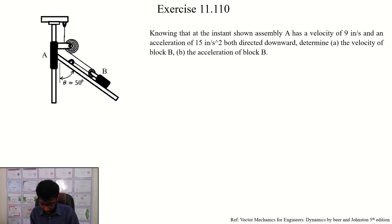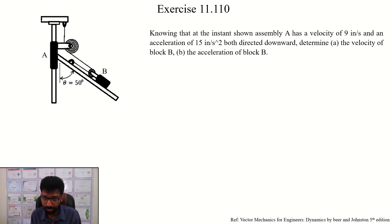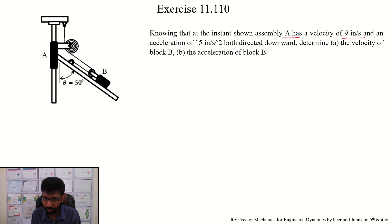Dependent motion. We are going to ask you a question. Knowing that at the instant shown, assembly A has a velocity of 9 inches per second and an acceleration of 15 inches per second squared, both directed downward.